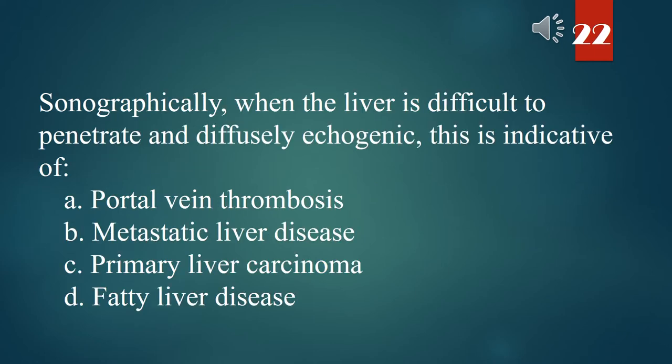Sonographically, when the liver is difficult to penetrate and diffusely echogenic, this is indicative of: A. Portal vein thrombosis. B. Metastatic liver disease. C. Primary liver carcinoma. D. Fatty liver disease. The answer is D. Fatty liver disease.